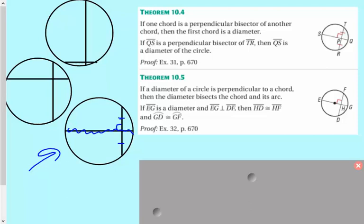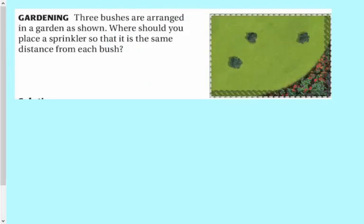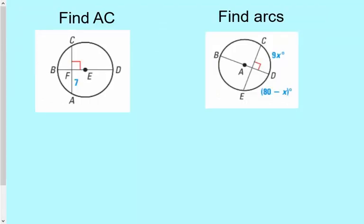A lot of words there, a lot of jargon, I guess, a lot of lingo with big fancy circle words. So we're going to apply that here. What I notice here is I have a diameter and the diameter is perpendicular to this chord. So that means it cuts the chord in half. So 7 and 7. So AC will be 14.